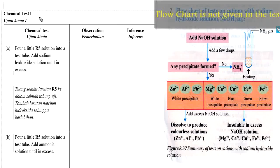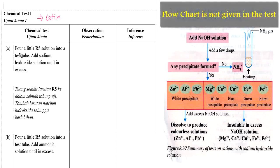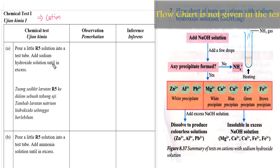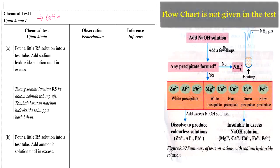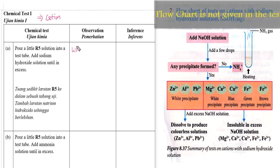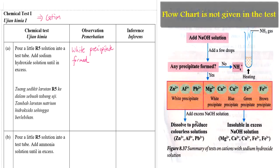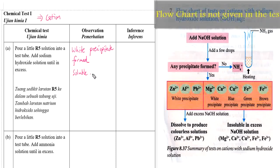For chemical test 1, it is for cations inside the R5 solution. Instruction A: put a little bit of R5 solution into a test tube, then add sodium hydroxide solution until in excess. After you have done the experiment, if you add a little bit of sodium hydroxide solution, it will form a white precipitate. So your observation: white precipitate formed. Then in excess sodium hydroxide solution, it is dissolved — write down: soluble in excess sodium hydroxide solution.